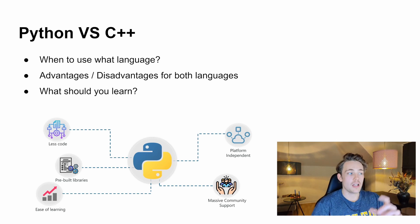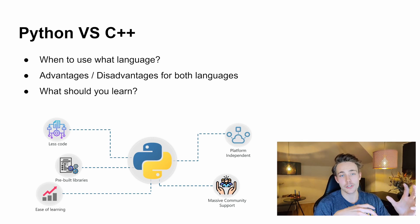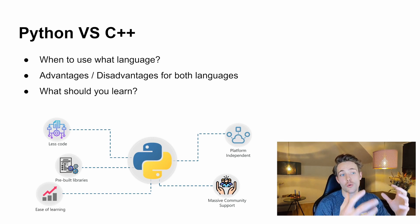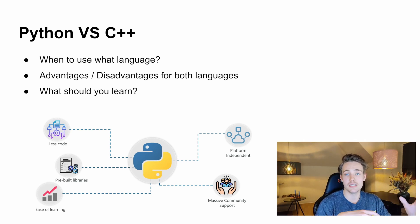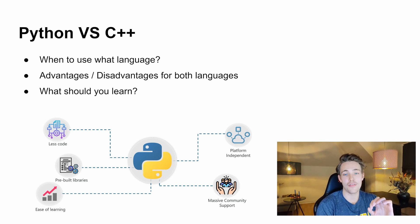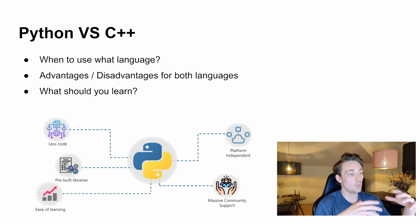So first of all we're just going to go through a couple of slides and talk about Python versus C++, memory, machine learning, artificial intelligence and so on. We're going to talk about what language you should use and the advantages in different situations. Then we're going to talk about some of the different frameworks we have for machine learning, AI, and deep learning.